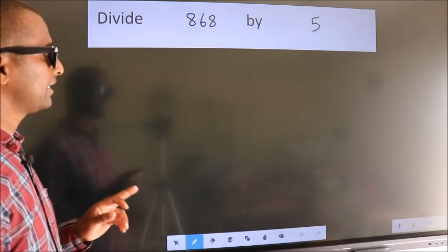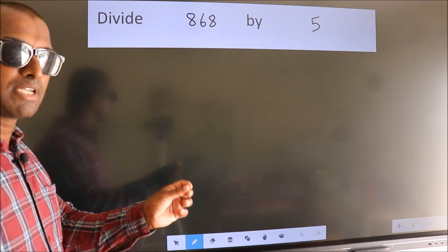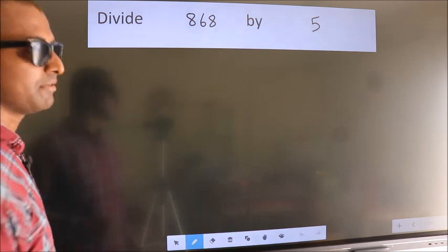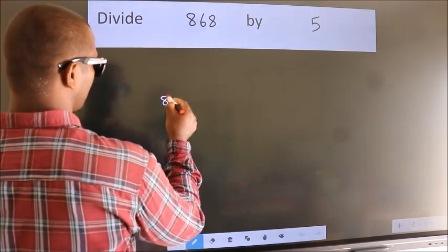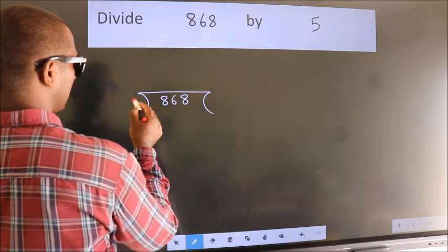Divide 868 by 5. To do this division, we should frame it in this way: 868 here, 5 here.